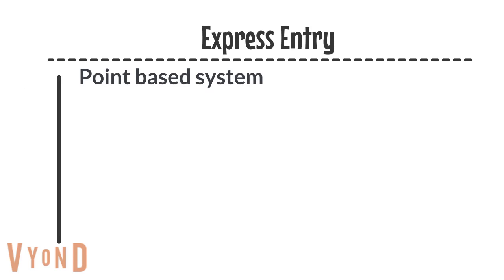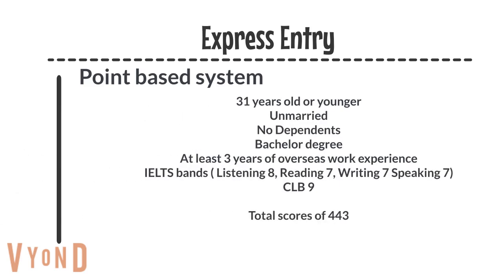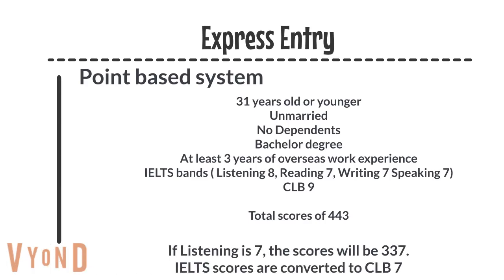This in part explains its popularity. The express entry process is a points-based system that awards the applicant points for certain qualities. For example, the most common applicant Patrick sees that has a likelihood of successful application for PR is: 31 years old, unmarried, no dependents, a bachelor's degree, three years of work experience outside of Canada, and an IELTS band 7 with listening at band 8 and reading, writing, and speaking at band 7 or higher. In this specific case, the applicant's attributes produce a total of 443 points.